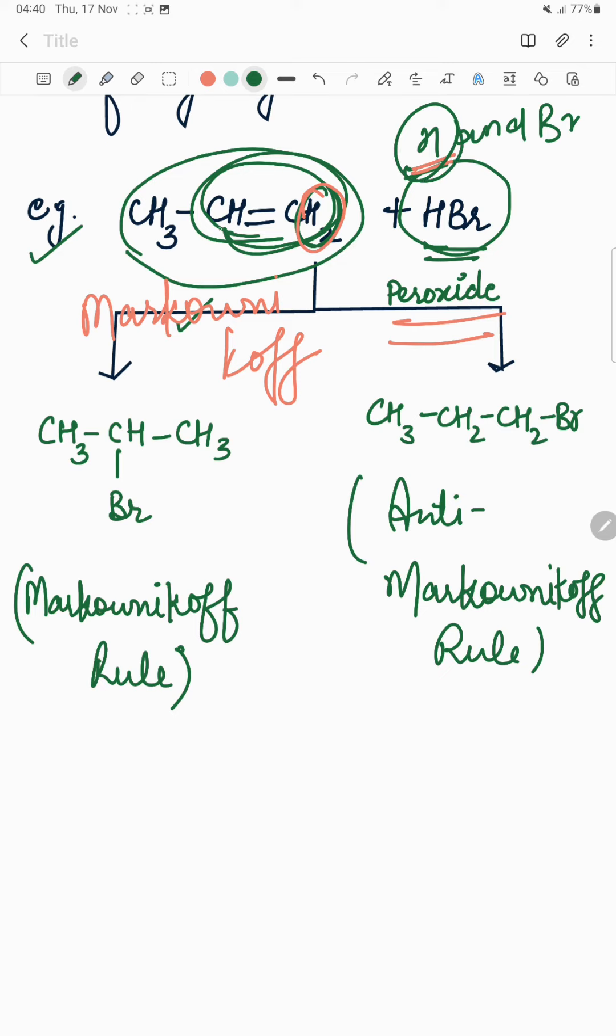But if you add HBr in presence of peroxide, then this H is added to the carbon with less number of hydrogen atoms. This is the reaction by anti-Markovnikoff rule, and that's why it's known as peroxide effect.